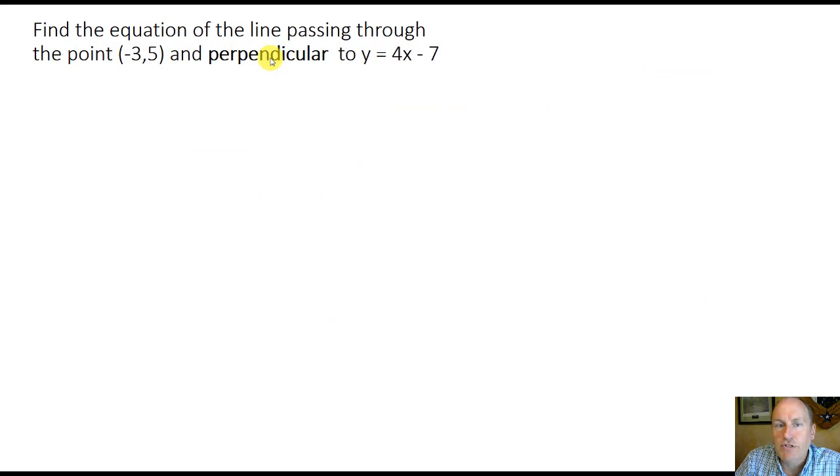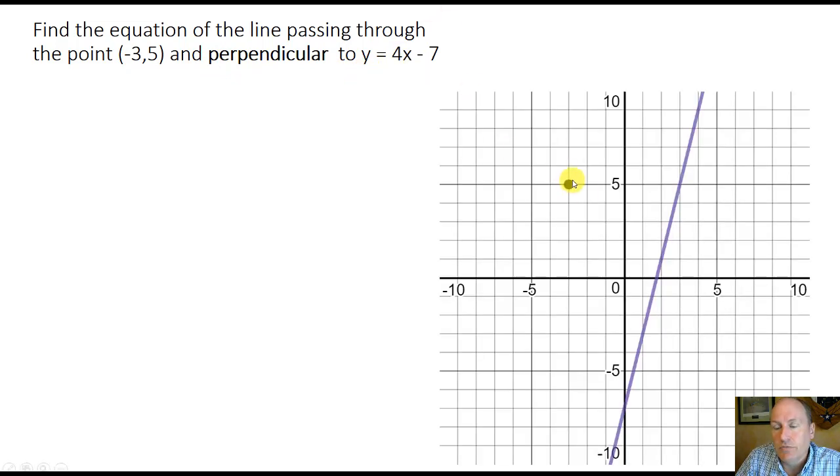Let's now find the equation of the line passing through that same point negative 3, 5, but perpendicular to y equals 4x minus 7. So same situation, negative 3 comma 5 is our point, the purple line 4x minus 7. Now, though, we're looking to create something like a perpendicular line, even though I didn't draw that very well.